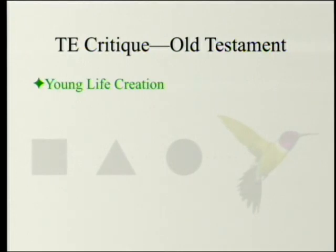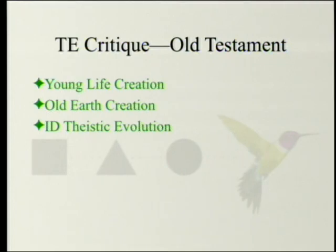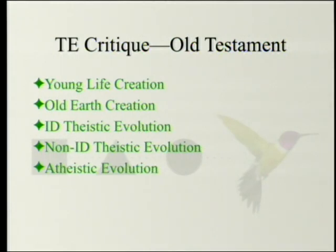You can have young life creation, which means in the last 10,000 years — maybe 6,000, maybe 7,500. You can have what's called old earth but really old life creation. You can have intelligent design-friendly theistic evolution. You can have intelligent design-unfriendly or non-intelligent design theistic evolution — God did it but you can't tell — and he did it by a slow process. And finally, you can have atheistic evolution where you can't tell because God didn't do it.